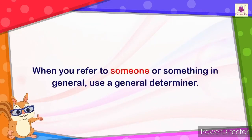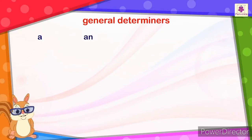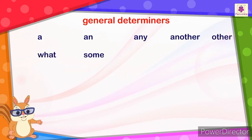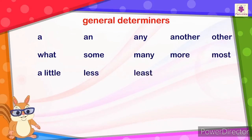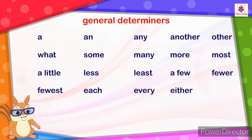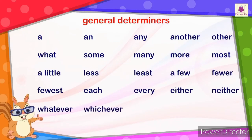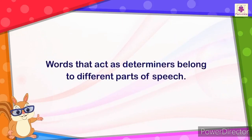When you refer to someone or something in general, use a general determiner. Some general determiners are: a, an, any, another, other, what, some, many, more, most, a little, less, a few, fewer, fewest, each, every, either, neither, whatever, whichever, all, both, half, one, two, and so on. Words that act as determiners belong to different parts of speech.